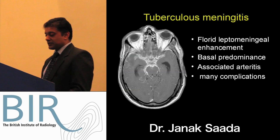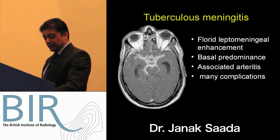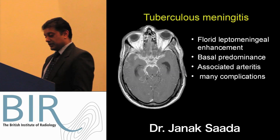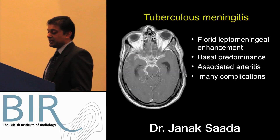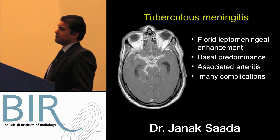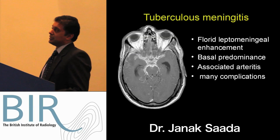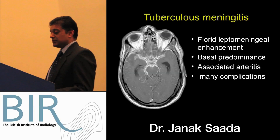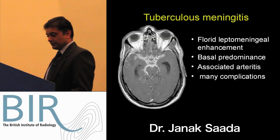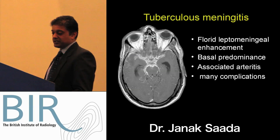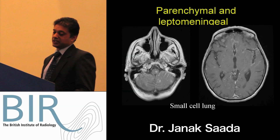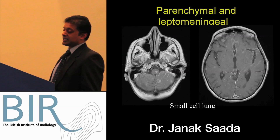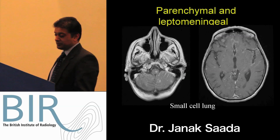This is a very characteristic pattern of basal meningitis seen with TB, but you can also see the same pattern of leptomeningeal malignancy with carcinomatosis and sarcoid. Here is another example of leptomeningeal enhancement in the setting of small cell lung cancer metastatic disease, both in the CSF as well as in the parenchyma.